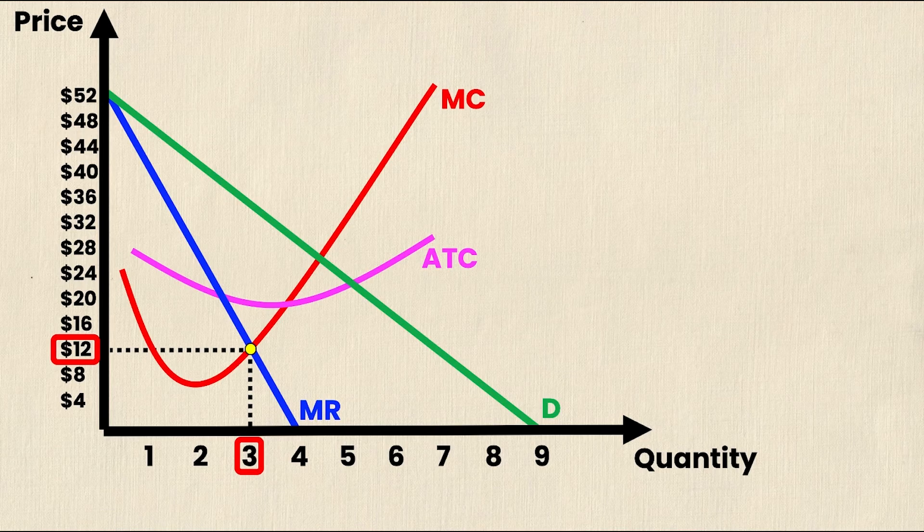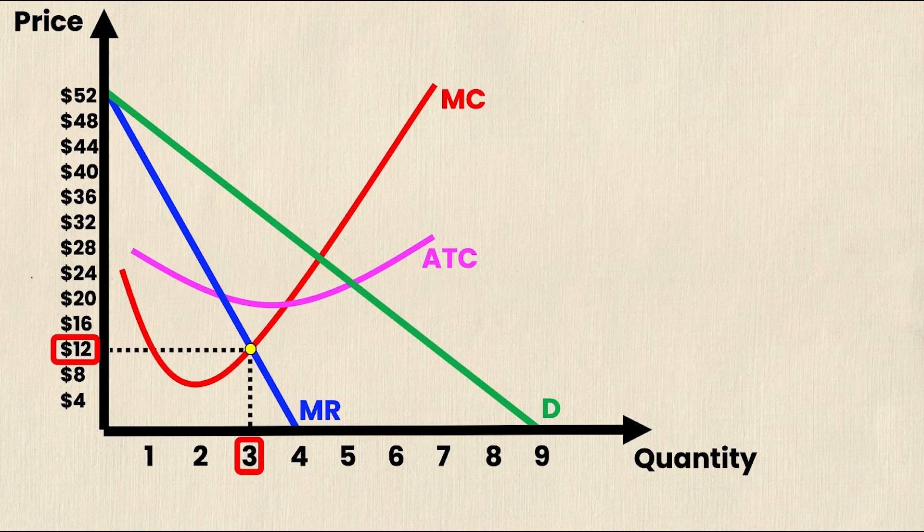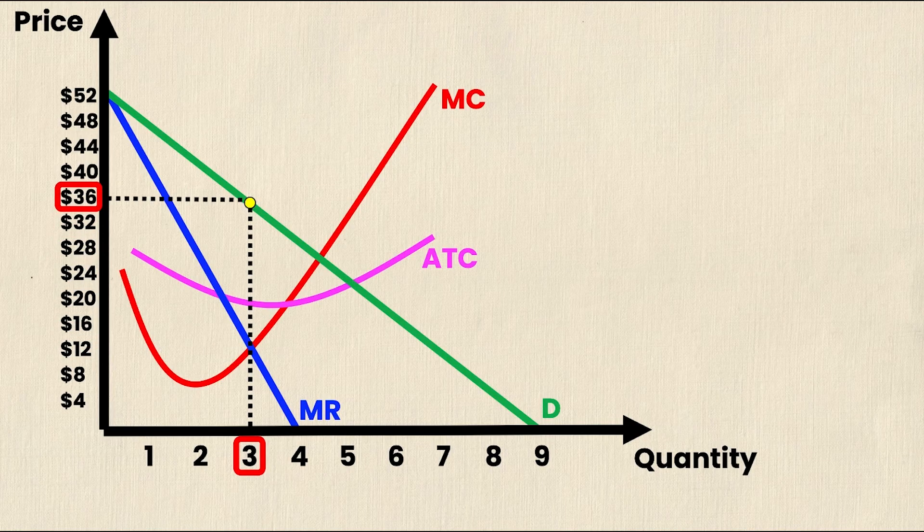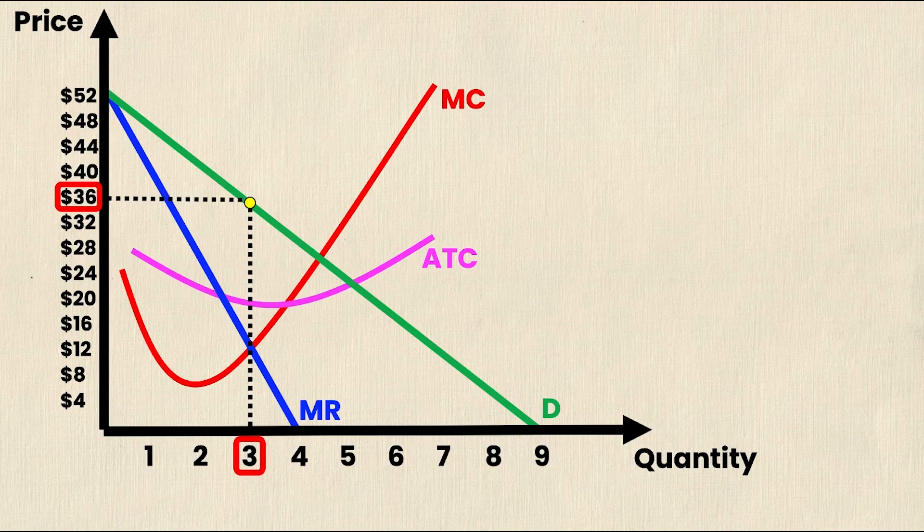But remember, monopolists don't have competition, which means they are not constrained to charging $12 as if this was a perfectly competitive market. Instead, they're actually going to follow this intersection point in a straight line up until they reach the demand curve and charge a price much higher. In this case, it's $36.